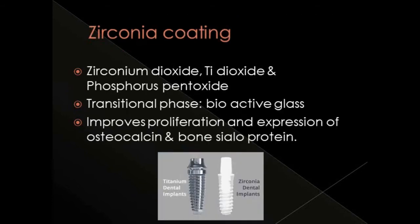Zirconia coating consists of zirconium dioxide, titanium dioxide, and phosphorus pentoxide. The zirconia is coated and fired in a furnace on a titanium core, similar to ceramic coated on metal copings in a metal-ceramic crown. The zirconia coating undergoes a transitional phase called bioactive glass — specifically microcrystalline zirconium titanate — which results in improved proliferation and expression of osteocalcin and bone sialoprotein. Zirconia can also be used to fabricate the entire implant instead of titanium.